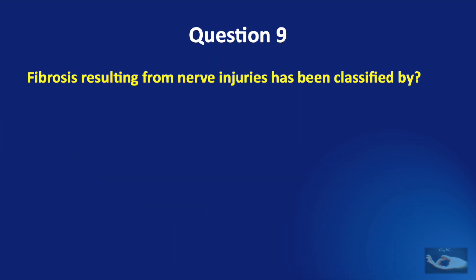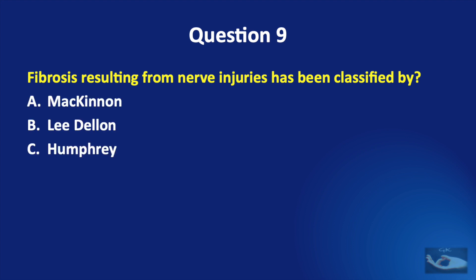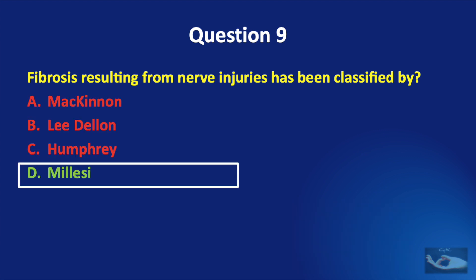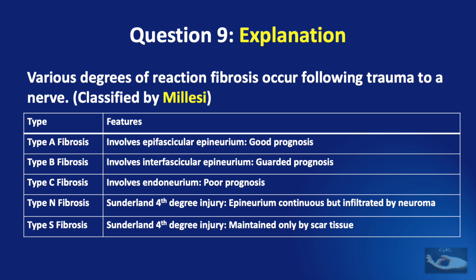Question number nine: fibrosis resulting from nerve injuries has been classified by McKinnon, Lee-Dellon, Humphrey, or Millesi? The correct answer is Millesi. Various degrees of reaction fibrosis occur following trauma to a nerve and these have been classified by Millesi. Type A refers to involvement of the epifascicular epineurium, which has a good prognosis. Type B fibrosis involves the interfascicular epineurium, which has a guarded prognosis. Type C fibrosis involves the endoneurium, hence a poor prognosis. Type N fibrosis corresponds to the Sunderland 4th degree injury where the epineurium is continuous but infiltrated by neuroma. Type S fibrosis also corresponds to Sunderland 4th degree injury, maintained only by scar tissue.